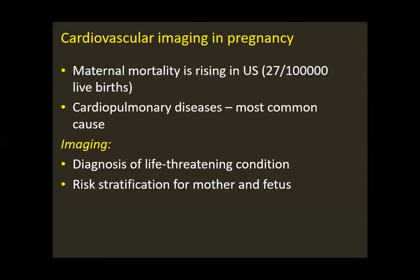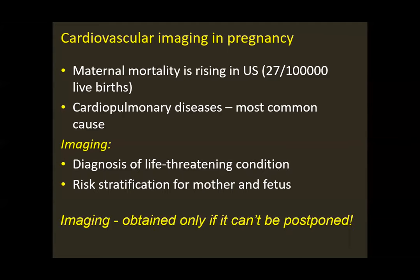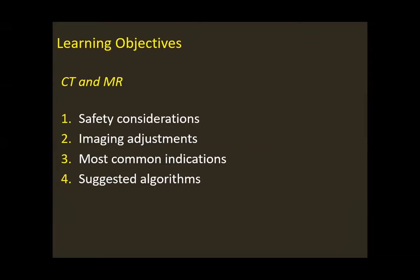Cardiovascular imaging during pregnancy is used for two reasons: to diagnose life-threatening conditions during pregnancy, and to do risk stratification for mother and fetus, especially if the age of pregnancy is early. Imaging should be obtained only if it cannot be postponed — that is one of the key take-home messages. I will focus primarily on CT and MRI imaging during pregnancy, covering safety considerations for both modalities, how we adjust the protocols, the most common indications, and suggested algorithms for imaging.